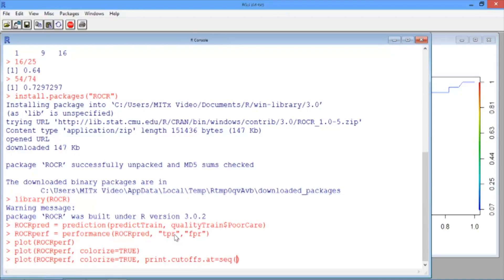Which will print the threshold values in increments of 0.1. If you want finer increments, just decrease the value of 0.1.